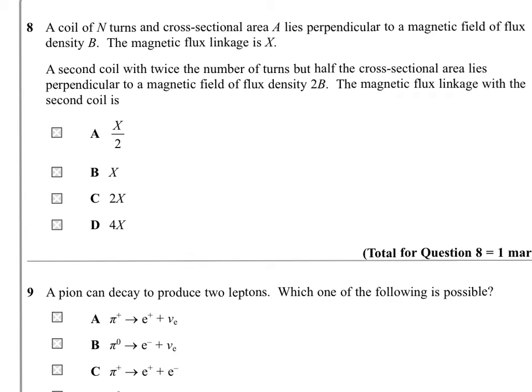So we've got that the linkage N phi equals N B A. And we've got N and B and A in the first thing. So basically what we're saying is that X equals N phi equals N B A.